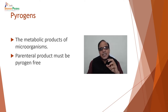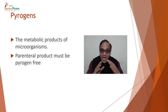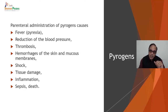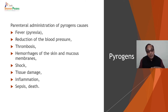Pyrogens are the metabolic products of microorganisms, and parenteral products or all sterile products must be pyrogen-free. There must not be any pyrogens in any sterile product. Parenteral administration of pyrogens may cause fever, increase in body temperature, reduction of blood pressure, thrombosis, hemorrhages of the skin and mucous membrane, shock, tissue damage, inflammation, sepsis, or even death.